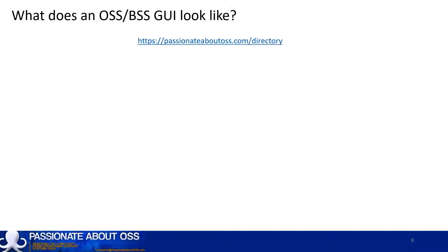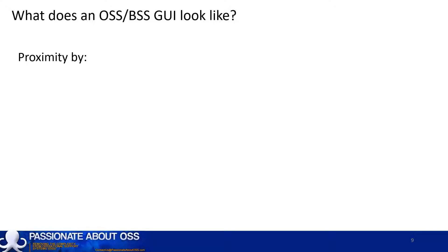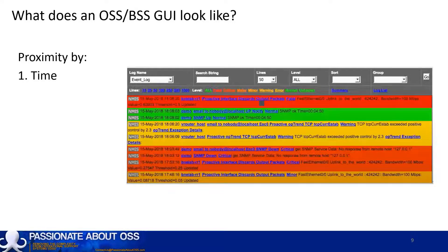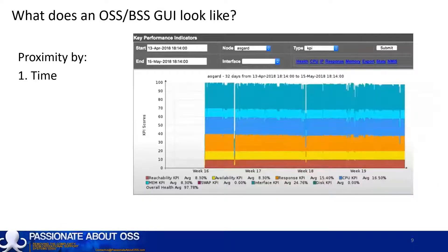There are over 400 vendors creating OSS, BSS, or similar products, and we've provided a list of them at the Passionate About OSS directory. When you combine that with the 75 or so boxes showing functionality groupings on the TAM from earlier in this video, you can see there are many, many ways of presenting a GUI. I tend to categorize GUIs by the way we present adjacencies in data — what I refer to as proximity effects. We present information by proximity to time, for example showing log files or a list of events propagated from the network, potentially via time-related performance counters such as this one on a bar chart.